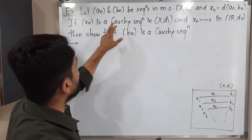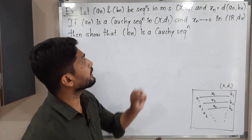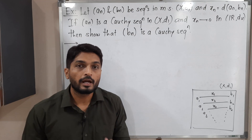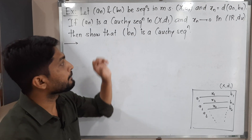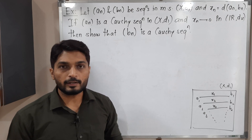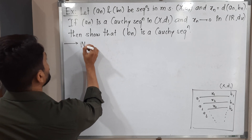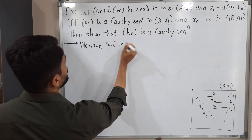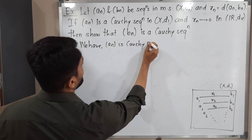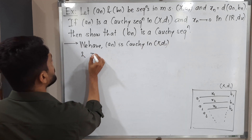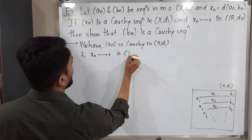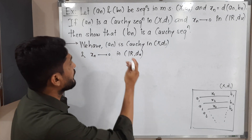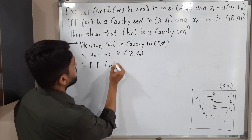We have two important pieces of information. First, aₙ is a Cauchy sequence in (X, d1). Second, xₙ converges to zero — meaning this distance is going to zero. Our target is to prove that bₙ is also a Cauchy sequence.